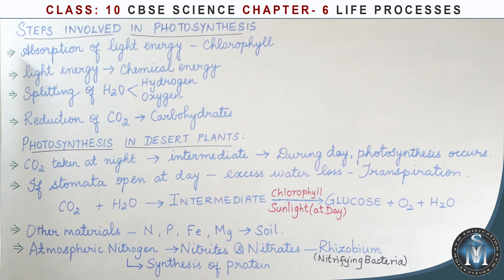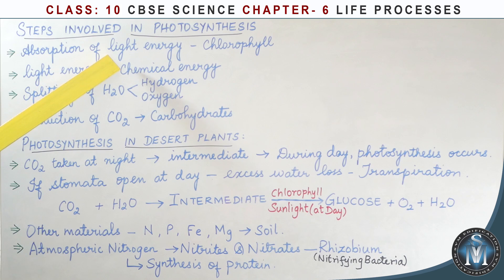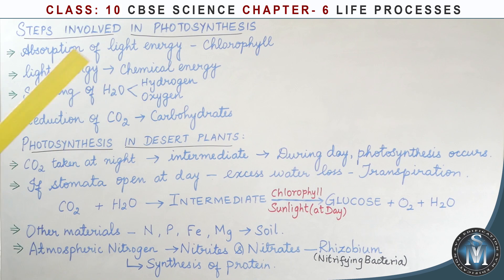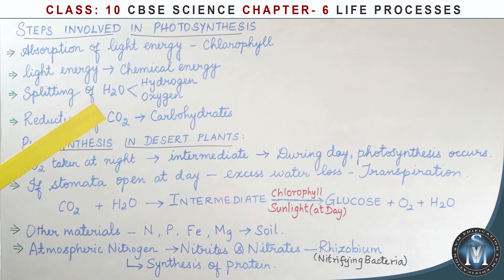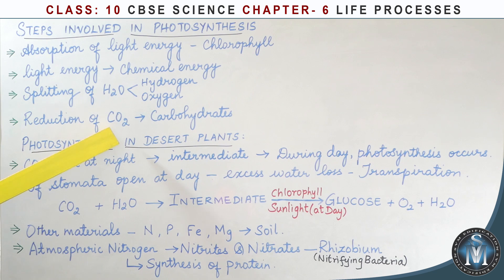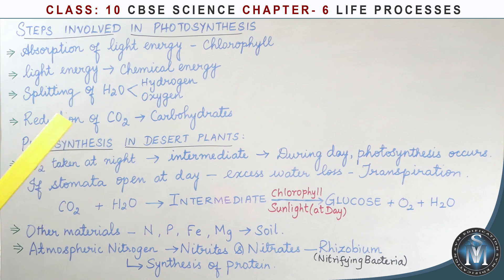Let's look at the stages of photosynthesis. First, light energy from sunlight is absorbed by chlorophyll and converted into chemical energy. Water (H2O) is split into hydrogen and oxygen. The hydrogen is used, and carbon dioxide is taken in and converted into carbohydrates.